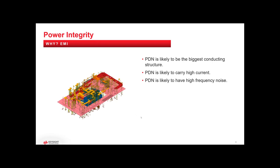The PDN is the biggest structure in your system — all those traces and power planes carry high current and high frequency noise, which can create EMI problems and radiated emission issues. Even if you pass EMI certification due to a tight enclosure, if you have radios in there you could be polluting them. Keeping that noise down gives you a better chance of passing EMI or not interfering with your own radios.